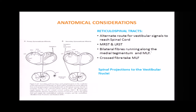The contralateral pathway arises from the entire length of the spinal level. The ipsilateral fibers are mainly from the neck, while the contralateral fibers send signals from the entire length of the spinal column and give collaterals to the contralateral lateral vestibular nuclei and the descending vestibular nuclei on the way toward the cerebellum.